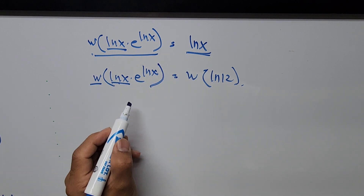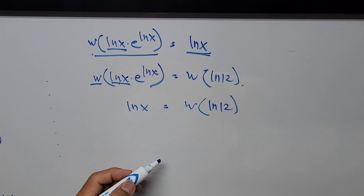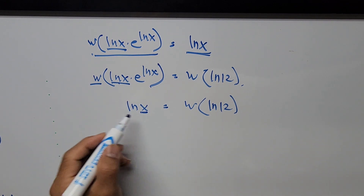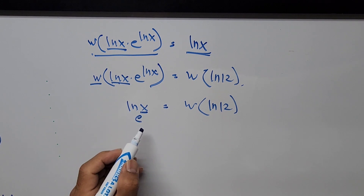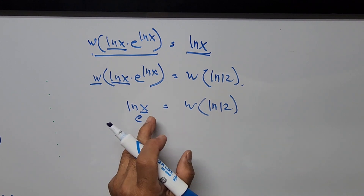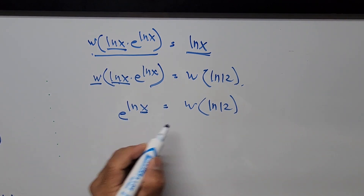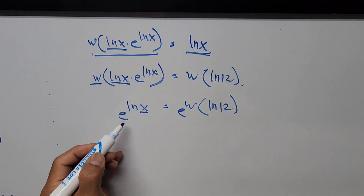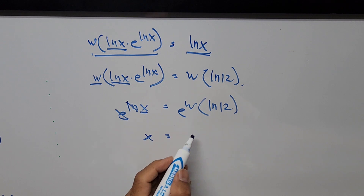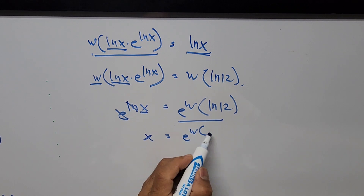From ln(x) = W(ln(12)), we solve for x by exponentiating both sides with base e. Since e to the power of ln(x) cancels to give x on the left hand side, we get x = e to the power of W(ln(12)).